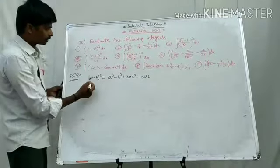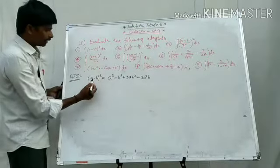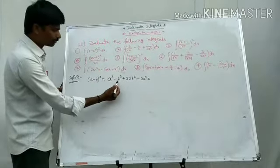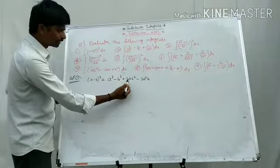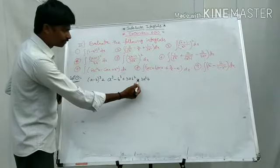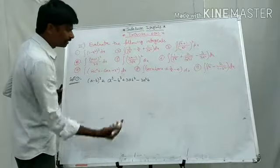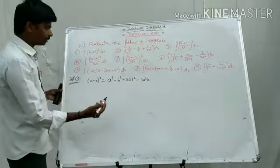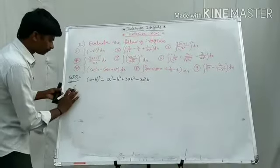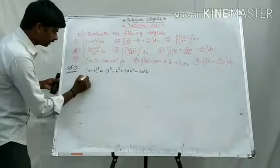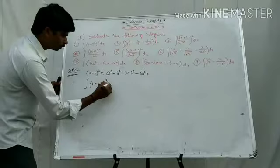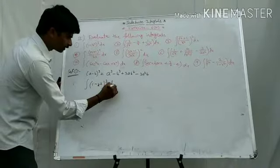This is based on the (a minus b) whole cube formula: a cube minus b cube plus 3a squared b minus 3ab squared. We apply this to the integral of (1 minus x squared) whole cube dx.